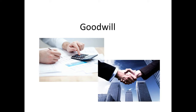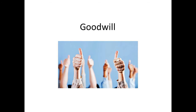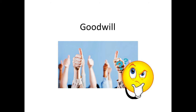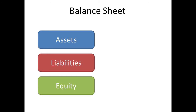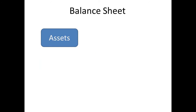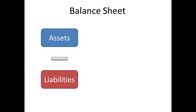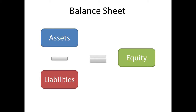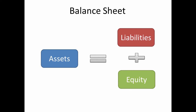It's kind of interesting when you break it down. But first, let's do a quick review of the balance sheet. We got three sections: assets, liabilities, and equity. Assets are stuff that you own, liabilities are stuff that you owe to other people. And if you take everything you have and subtract everything you owe, what you got left is your net worth, which is also called equity. That's the basic accounting equation, and usually we rearrange it with assets on the left, and liabilities and equity on the right.